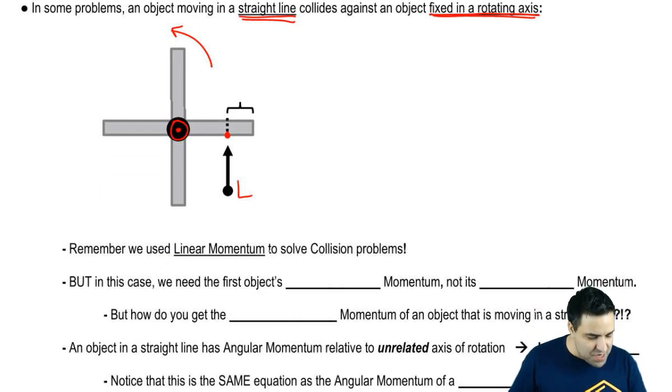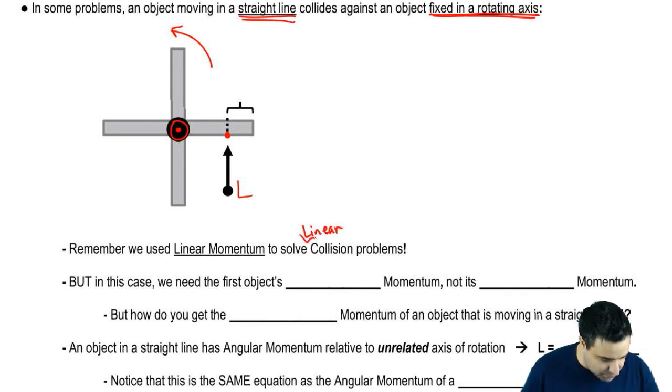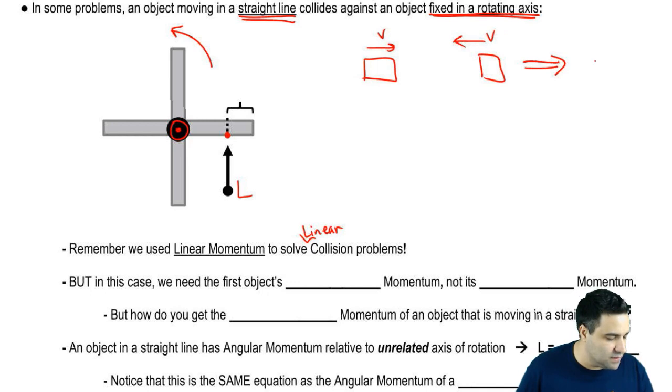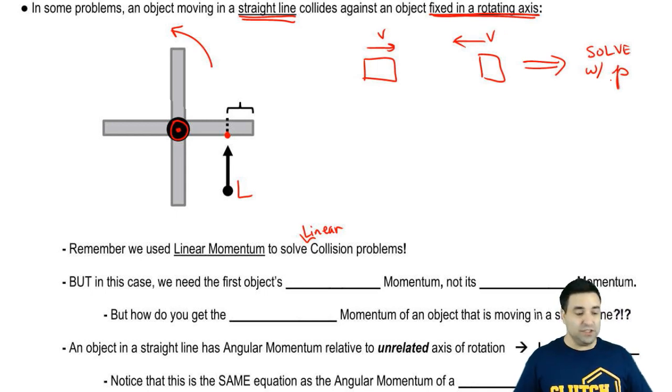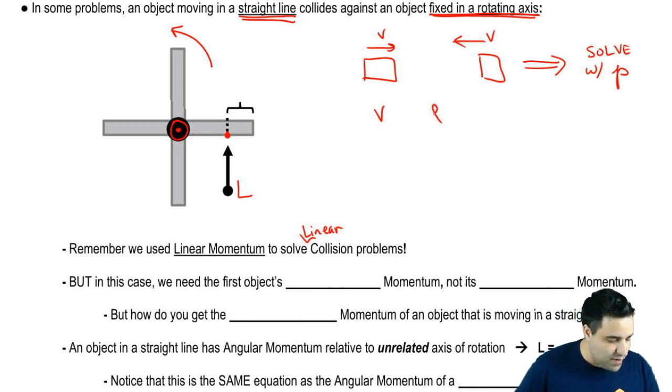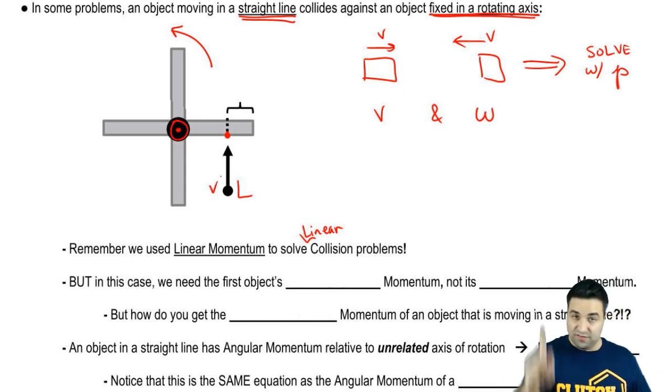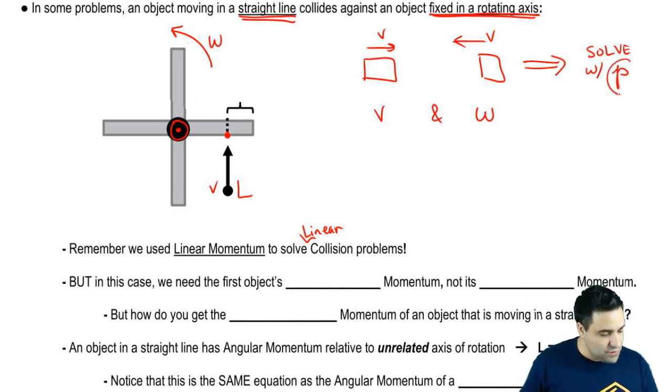You may remember that we use linear momentum to solve collision problems - linear collision problems. If you have a problem where both objects have linear velocity as they collide, then we're going to solve this with conservation of linear momentum. But if we have a situation where one object has a V and another object has an omega, like here, this object moves with a V, but then after the collision, the doors will have an omega, then we're not going to use P to do this. We're going to use L.